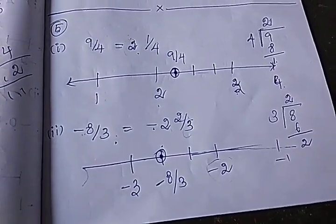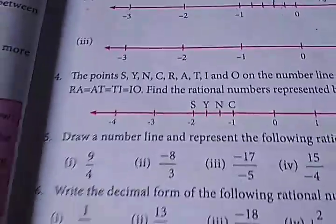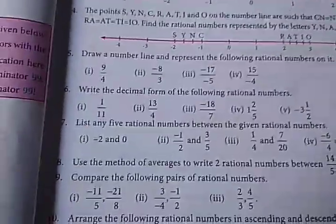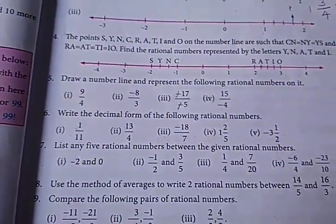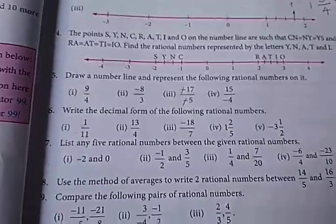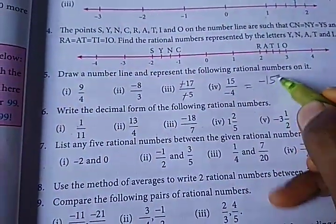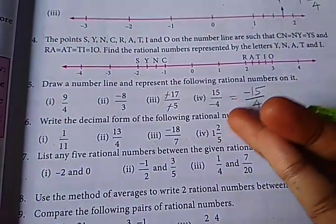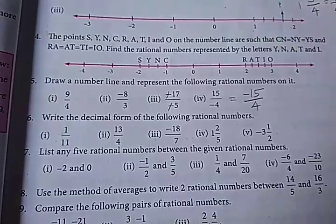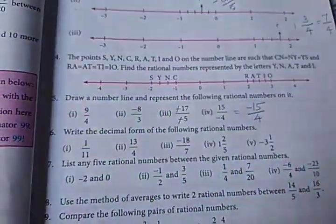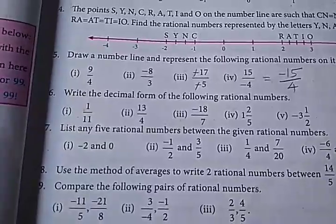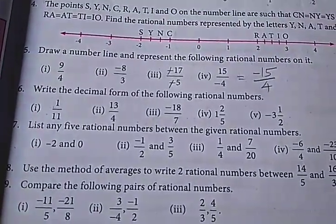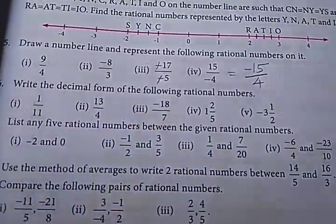So the next sums are homework. How to follow the marks: minus 17 by 5 and 15 by minus 4 are the homework sums. Now the next part: convert the following rational numbers to the decimal form.